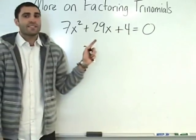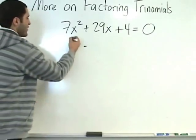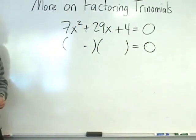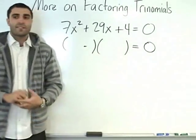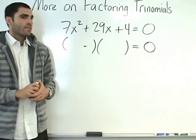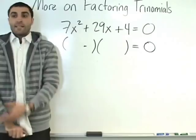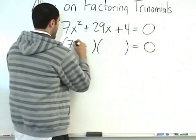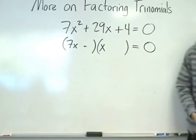First things first: is there a greatest common factor? No, there's no greatest common factor, so we can start our factoring process. If we were to do the foiling process — F times F — what times what is 7x squared? Would it be 7x and then x? Yes, 7x and x.